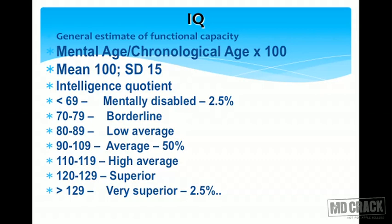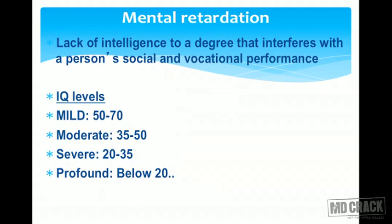Mental retardation is a lack of intelligence to a degree that interferes with a person's social and vocational performance. Based on IQ values, we classify it as: mild mental retardation with IQ from 50 to 70; moderate, 35 to 50; severe, 20 to 35; and profound mental retardation is defined as an IQ below 20.